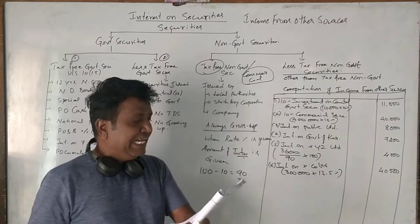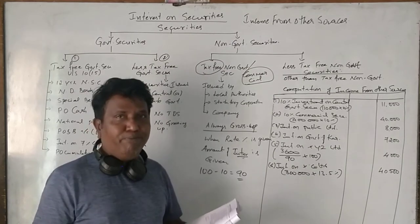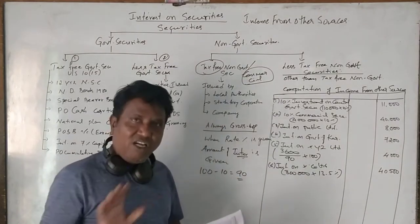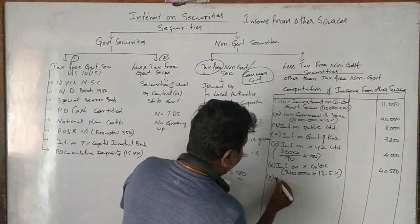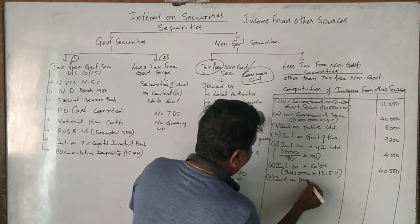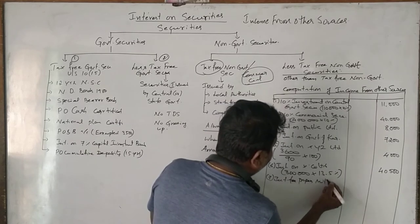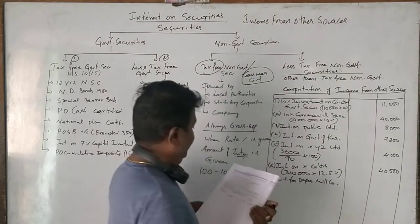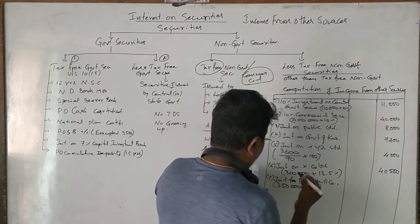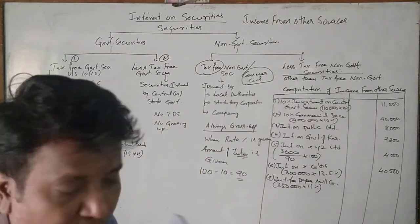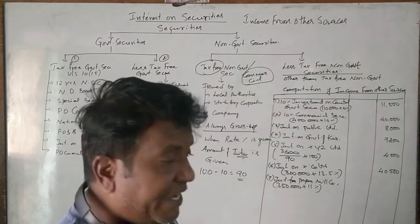Next, ₹3,50,000 at 11% securities of a paper mill company. A paper mill company is a non-government company and the tax-free word is not given. So interest on paper mill company: ₹3,50,000 into 11% equals ₹38,500.